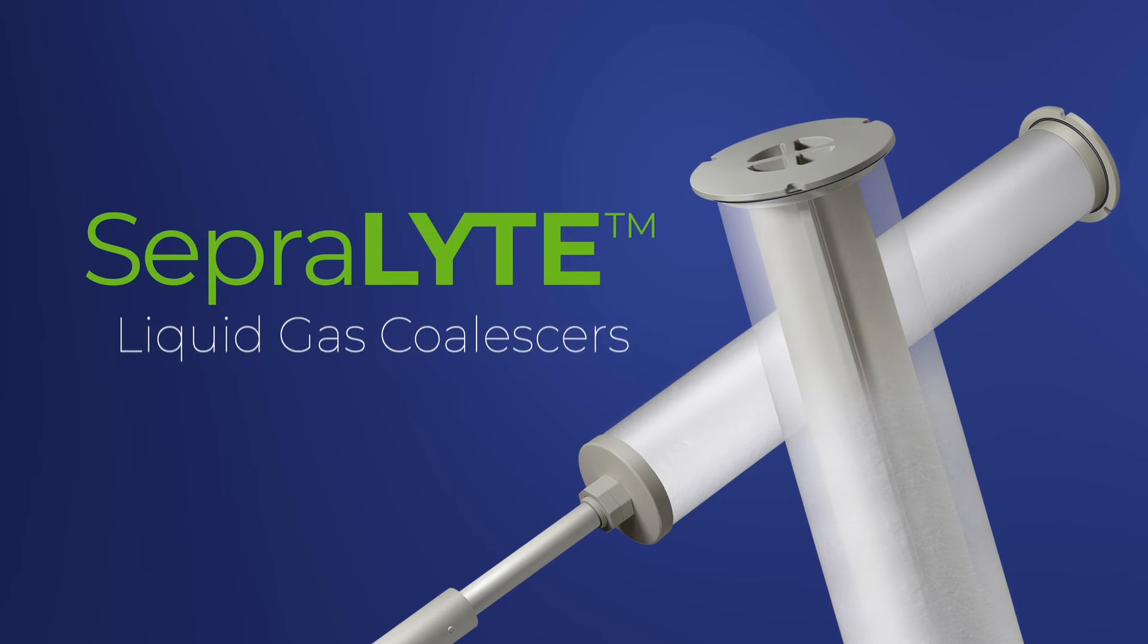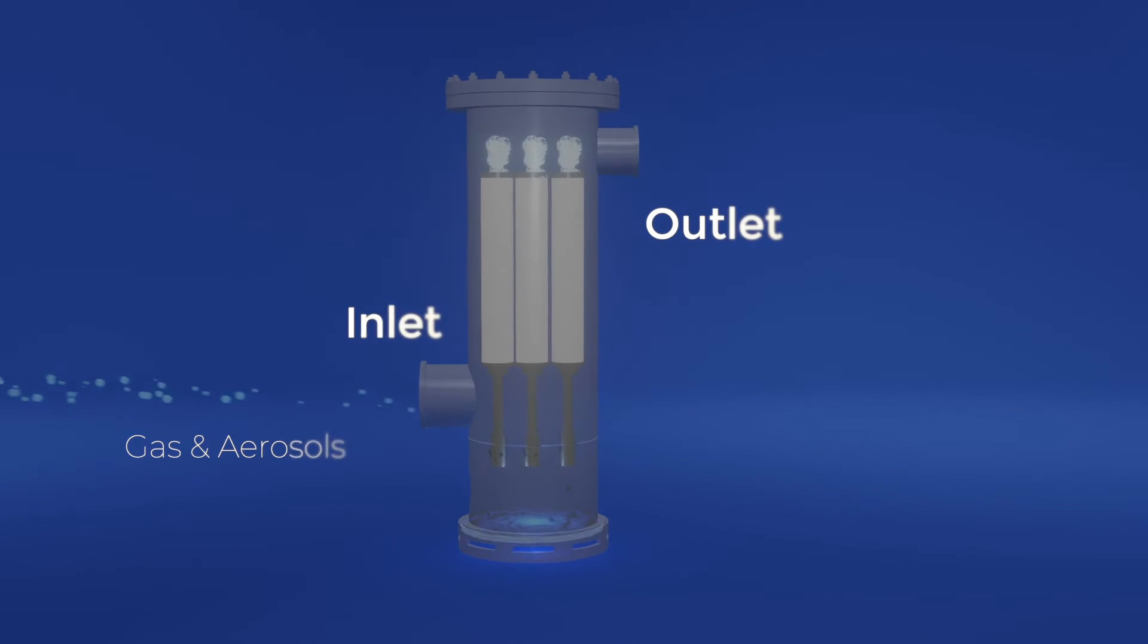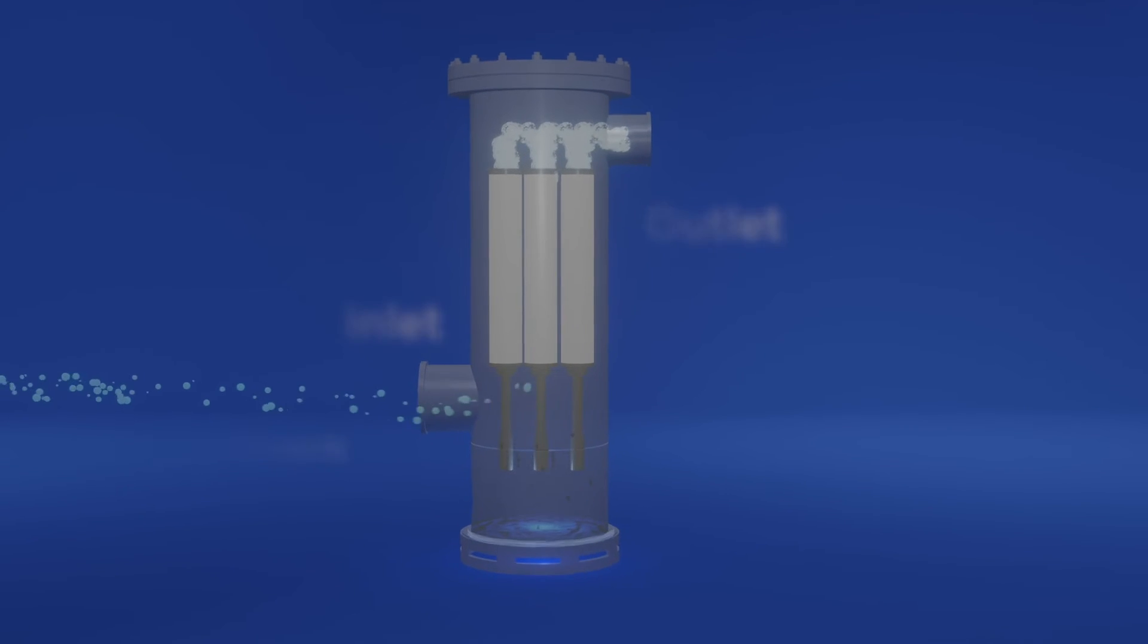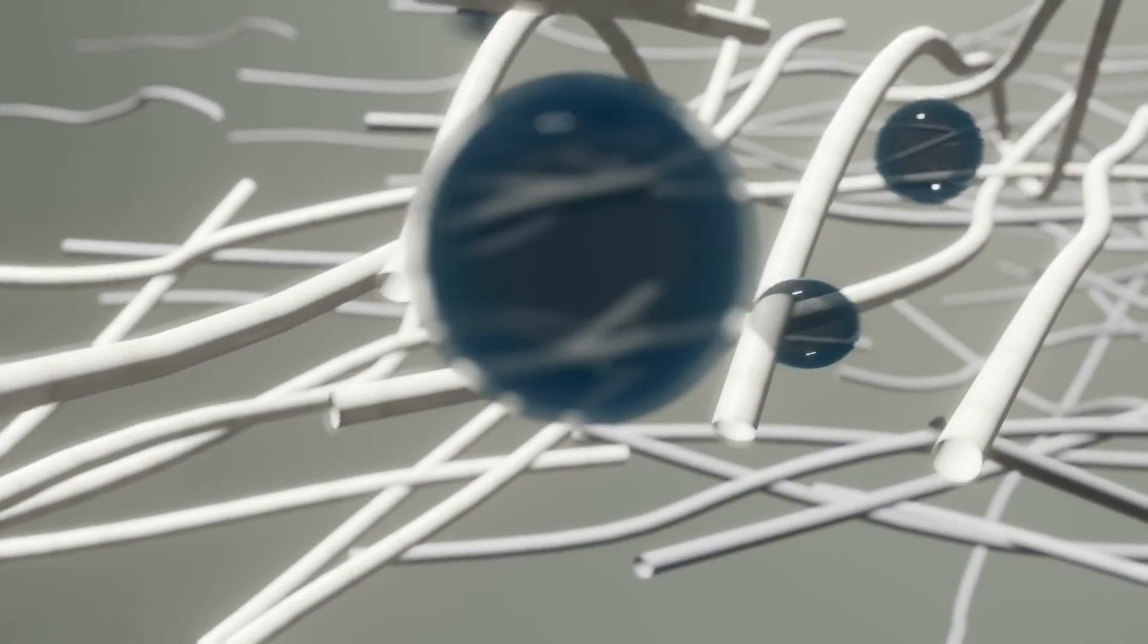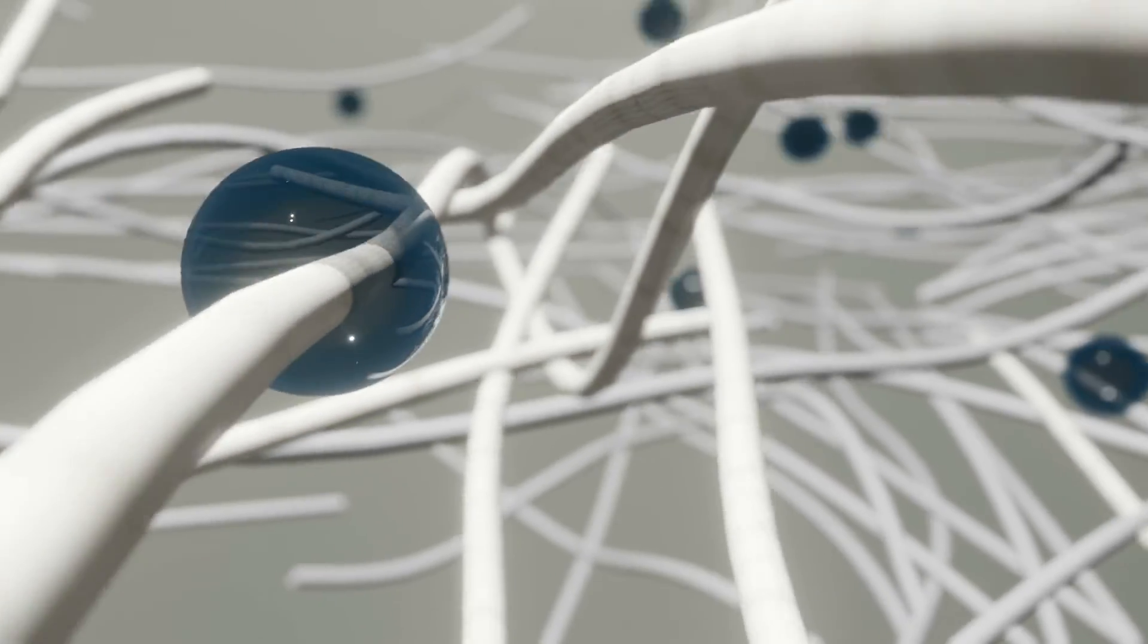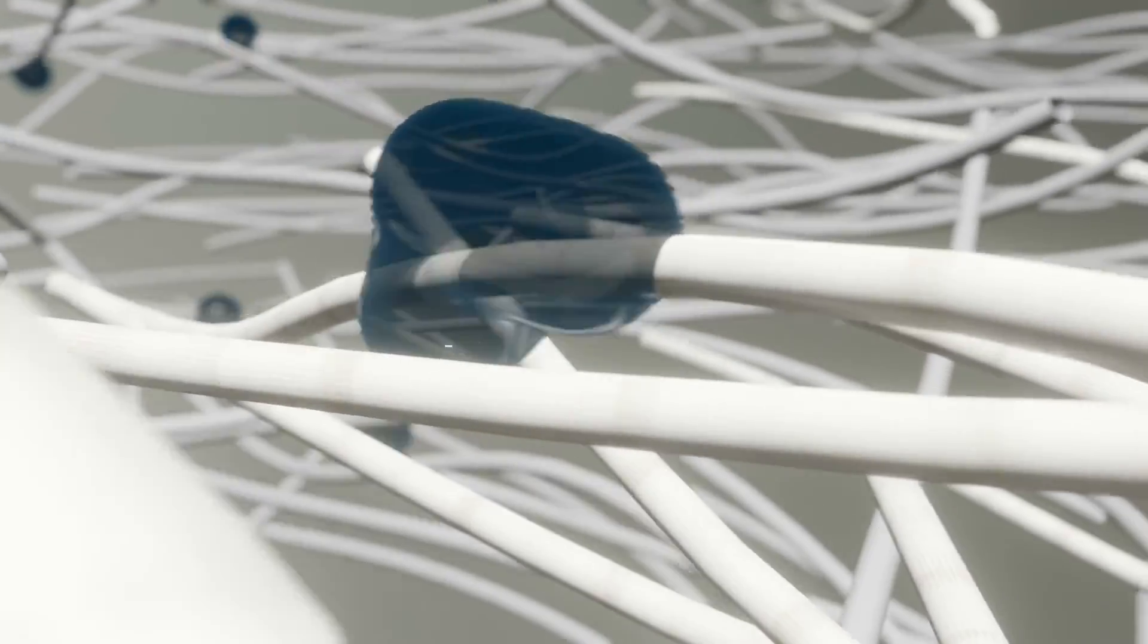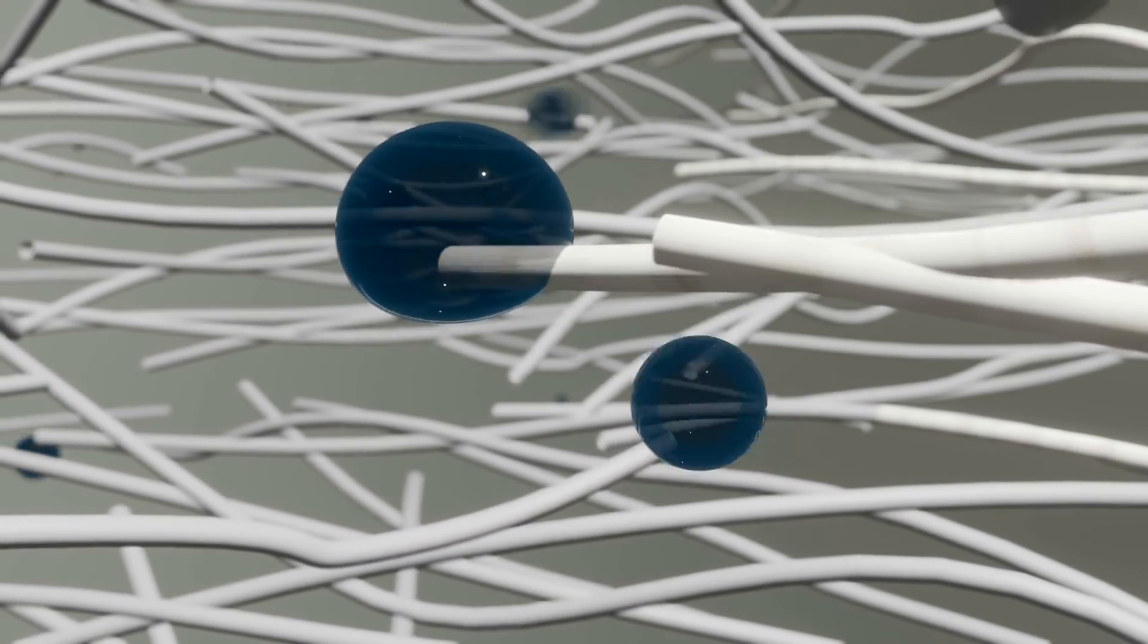But how do Seprolite liquid gas coalescers work? When the liquid-laden hydrogen gas travels into the vessel, it flows directly into the coalescer's fiber matrix. As the gas moves through the filter, the electrolyte liquid is separated from the hydrogen gas as it is firstly captured on the media fibers where it combines or coalesces into larger droplets.